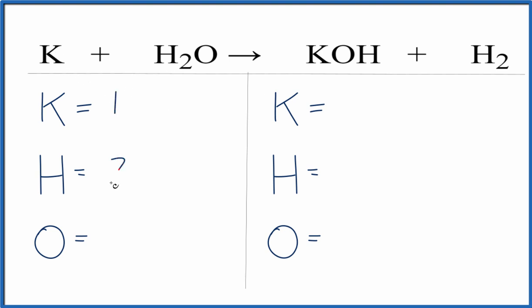One potassium, two hydrogens, and then just one oxygen. Over on the product side, we have the one potassium. Then for the hydrogens, we have one plus the two. So we have three hydrogen atoms, and then we have one oxygen.